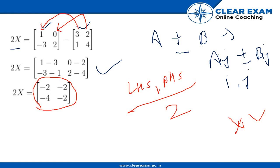So dividing both sides by 2, we get X is equal to [-1, -1; -2, -1]. So that is our final answer. I hope you all got it. Thank you.